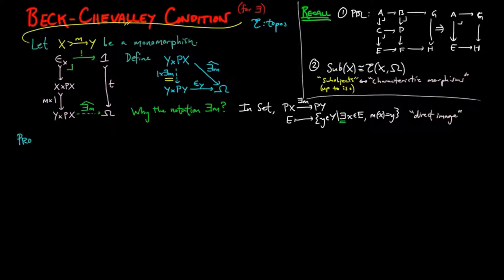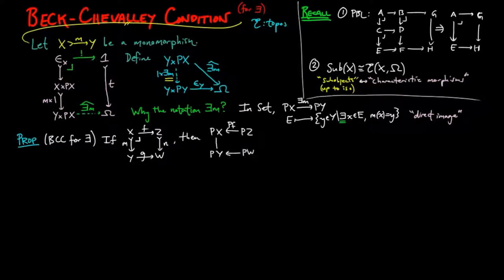We can now give the Beck-Chevalley condition: if the following is a pullback square with monomorphisms m and n, then the following diagram commutes.